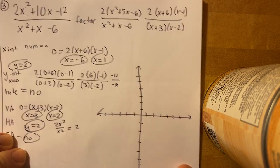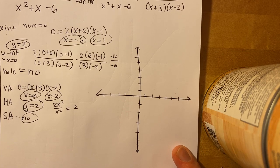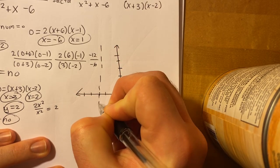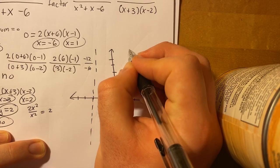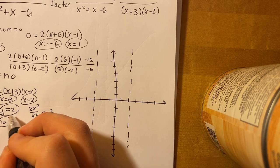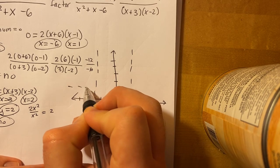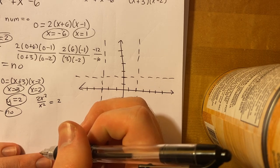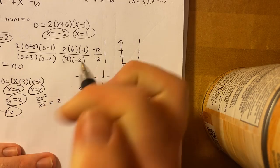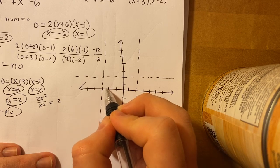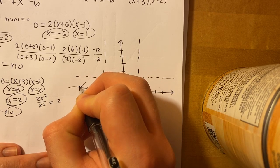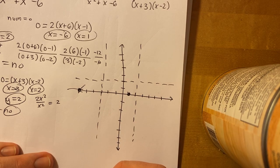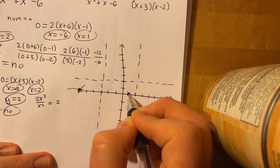We're ready to graph. Start with the asymptotes: draw dotted vertical lines at x = negative 3 and x = 2, and a dotted horizontal line at y = 2. Then plot the x-intercepts at x = negative 6 and x = 1, and the y-intercept at y = 2.